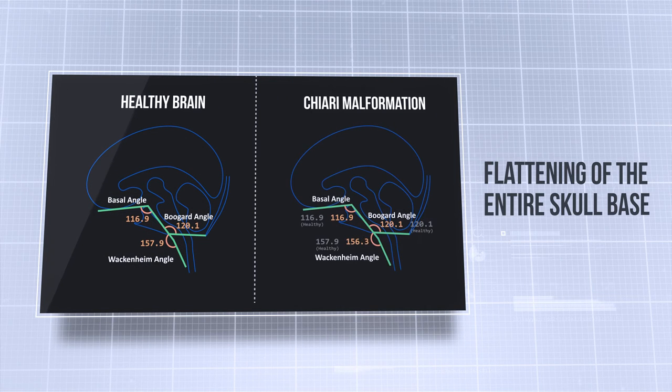As if that isn't enough, Chiari patients also tend to have a flattening of the entire skull base, which results from changes in three cranial angles.